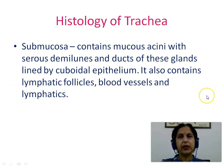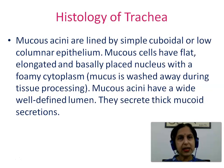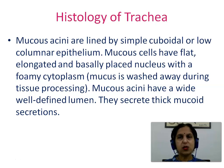We then study the submucosa. This contains mucous acini with serous demilunes and ducts of these glands lined by cuboidal epithelium. It also contains lymphatic follicles, blood vessels, and lymphatics. Mucous acini are lined by simple cuboidal or low columnar epithelium. Mucous cells have flat elongated and basally placed nuclei with a foamy cytoplasm, because the mucus stored in the cells is washed away during tissue processing.